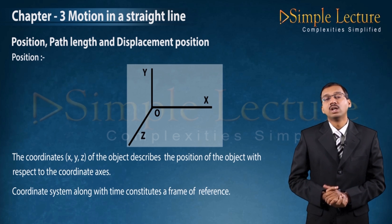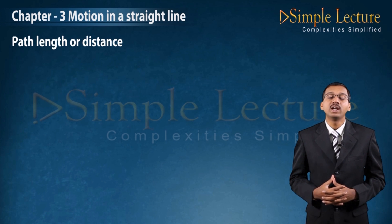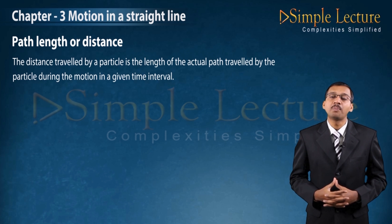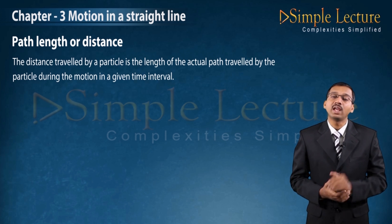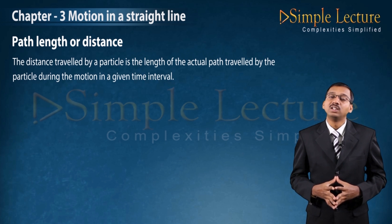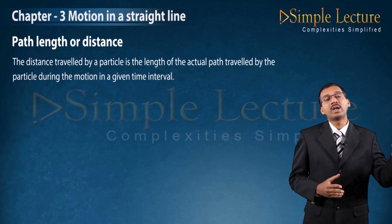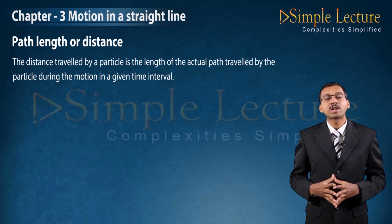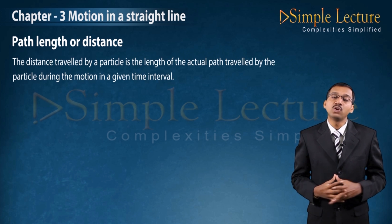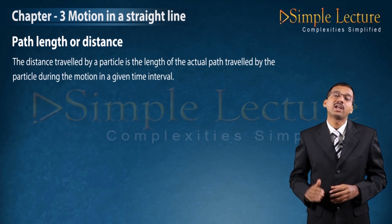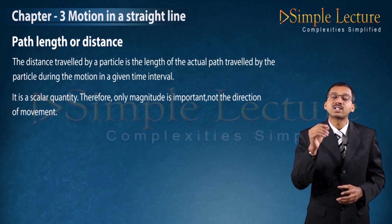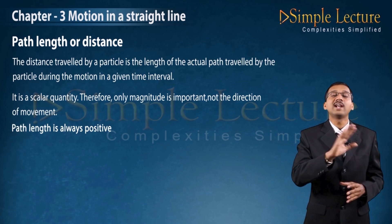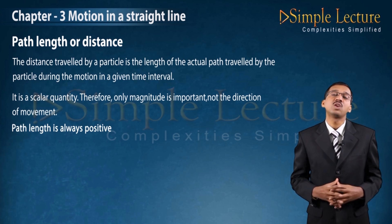That is about position. Next, moving to path length, also called distance. The distance traveled by the particle is the length of the actual path traveled by the particle during the motion in a given time interval, called the path length. The distance covered from one end to another is the path length. There is no particular direction — it can be covered in any direction. Therefore, only the magnitude is taken into consideration, not the direction. Path length or distance is a scalar quantity and always gives positive values.